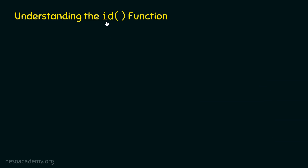What is the id function? Before understanding the id function, we must know that Python is a purely object-oriented programming language. Therefore, everything in Python is an object. Each object has some memory location, and Python allocates a memory location to each object. Therefore, each object has a unique id which we can use to refer to that object.